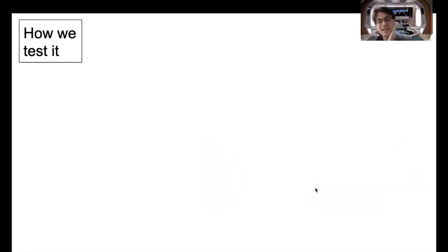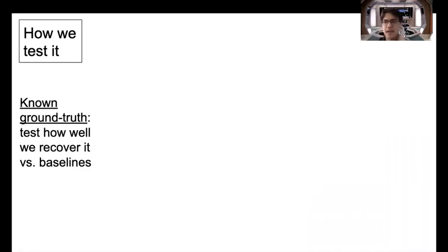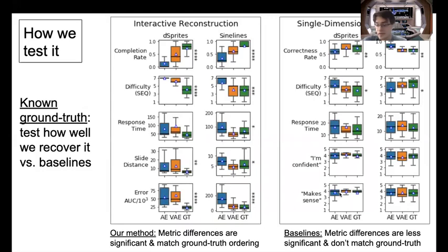As promised, we attempt to rigorously evaluate our evaluation metric in several ways. The first way we evaluate our metric is by constructing datasets and models with ground truth. That is, where we can justifiably assume, a priori, that certain models are more interpretable than others. We then test how well our method and baseline methods recover these ground truth rankings.